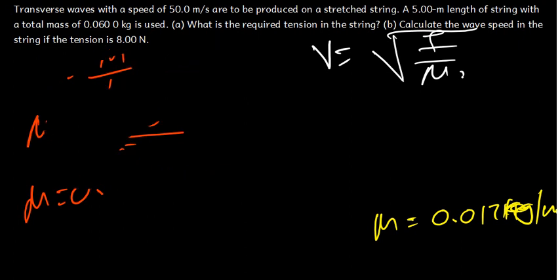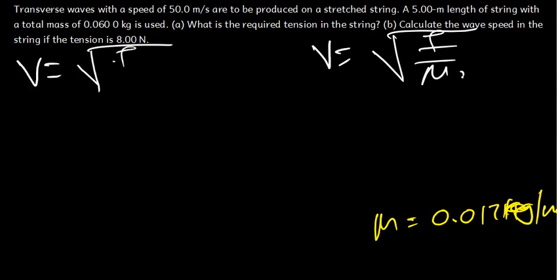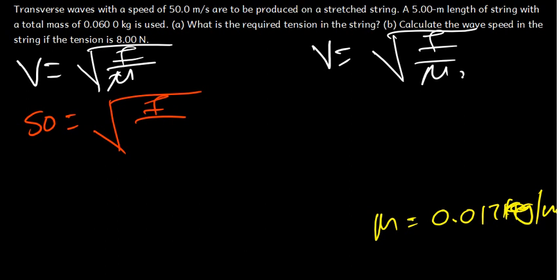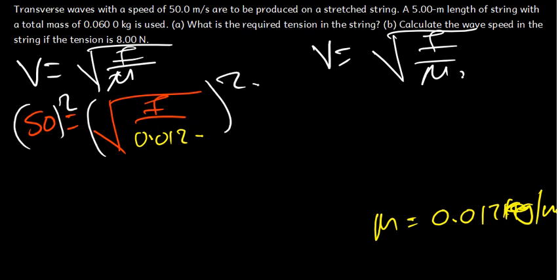Now we have everything to find the tension force. We use V = √(F/μ). Plugging in: 50 equals the square root of the force divided by 0.012. To eliminate the square root, we square both sides, giving us 50 squared equals the force divided by 0.012.